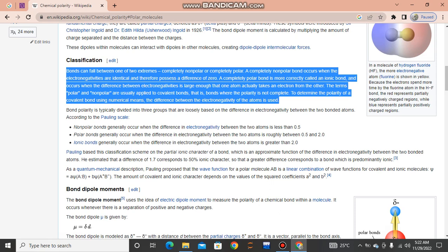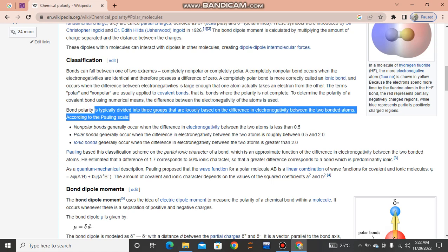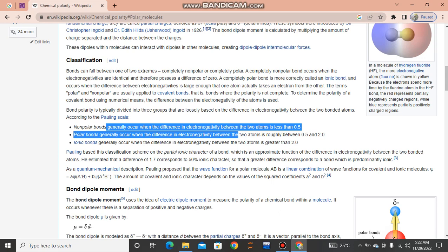To determine the polarity of a covalent bond using numerical means, the difference between the electronegativity of atoms is used. Bond polarity is typically divided into three groups that are loosely based on the difference in electronegativity between the two bonded atoms. According to the Pauling scale, nonpolar bonds generally occur when the difference in electronegativity between the two atoms is less than 0.5. Polar bonds generally occur when the difference in electronegativity between the atoms is roughly between 0.5 and 2.0.